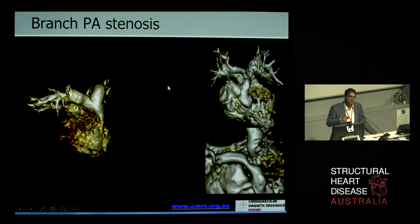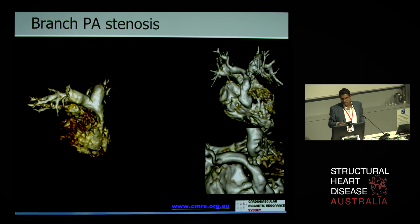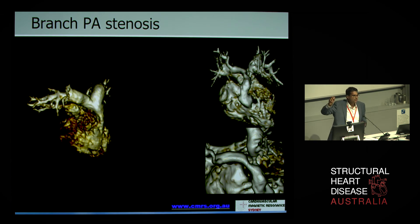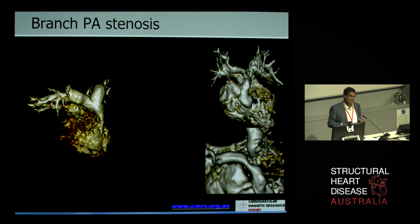MRI also adds value in looking distally into the branch pulmonary arteries. In the middle you see nice big branch pulmonary arteries that arborise really well, but on the right you see a really fixed focal stenosis at the origin of the right pulmonary artery. You would probably stent that too, because it just adds to the afterload on the ventricle — there's no point in fixing something at the valve level if you've got more stenosis distally. The ability to visualise that on MRI is really important.